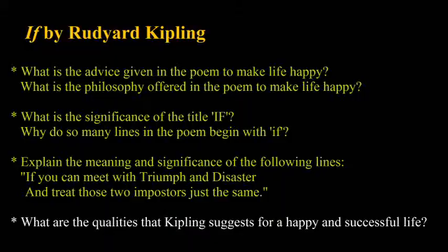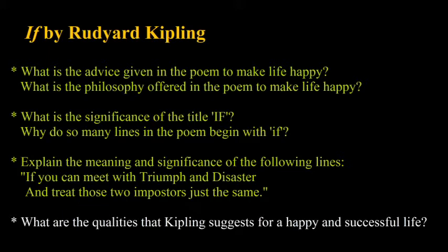Next poem: Rudyard Kipling's 'If' — a very beautiful and common poem. Important questions: What is the advice given in the poem to make life happy? What is the significance of the title 'If' — why do so many lines begin with 'if'? Explain the meaning and significance of the lines: 'If you can meet with triumph and disaster / And treat those two impostors just the same.' For long answers: What is the philosophy offered in this poem to make life happy? What are the qualities Kipling suggests for achieving a happy and successful life?